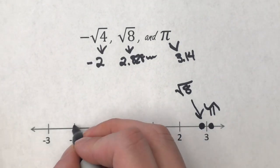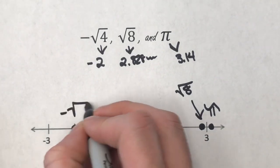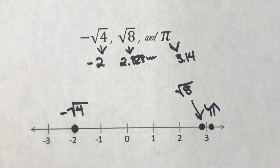And the negative square root of 4 is just negative 2, so that's easy. Let's put it right there. Done.